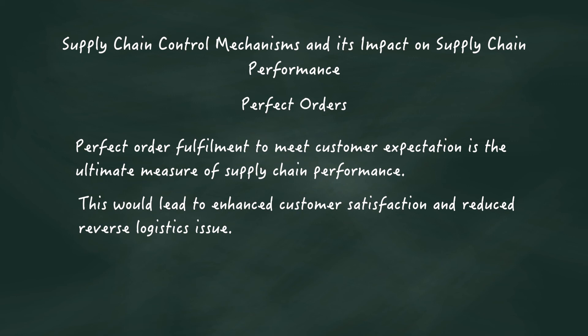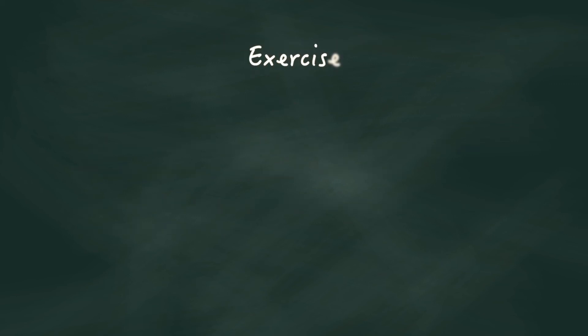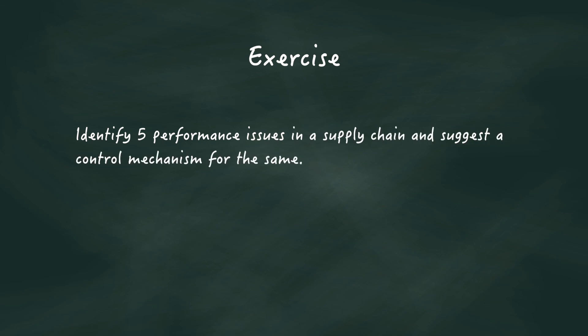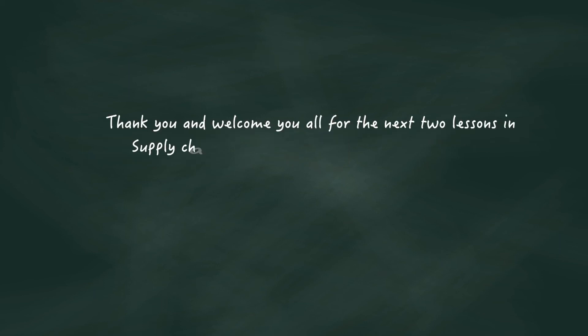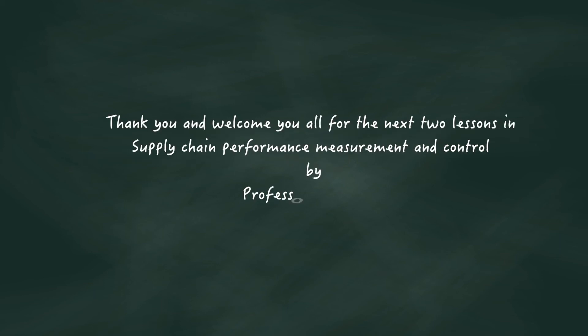With a basic understanding of performance measurement and control, here is a small exercise for you: identify five performance issues in supply chain and suggest a control mechanism for each. Thank you, and welcome you all to the next two lessons in supply chain performance measurement and control by Professor N. Vivek.